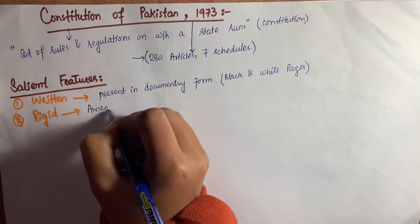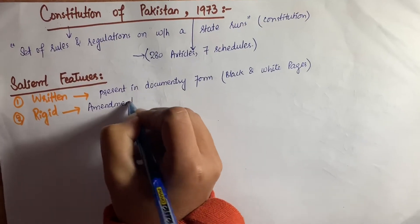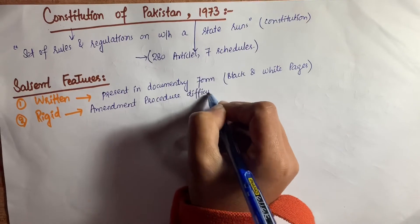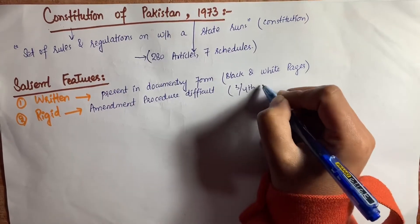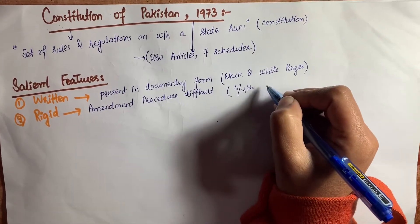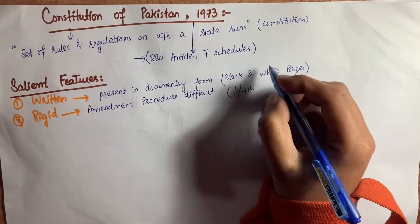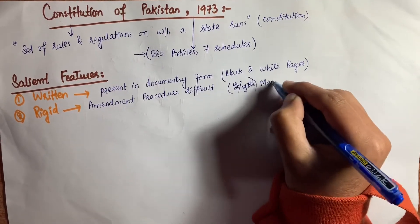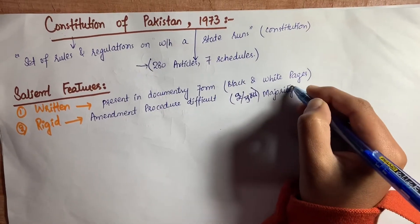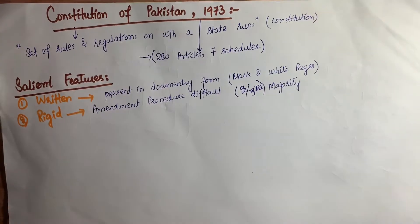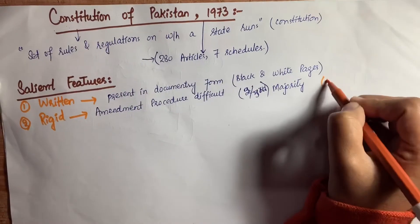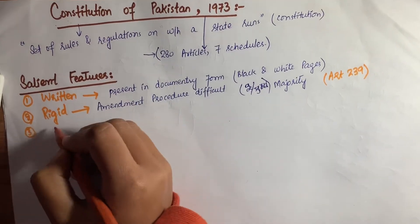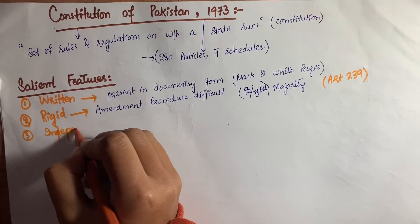Number two is rigid. The Constitution of Pakistan is rigid, which means that the amendment procedure is very difficult. According to Article 239 of the Constitution of Pakistan 1973, a two-thirds majority of parliament is required to amend the constitution.